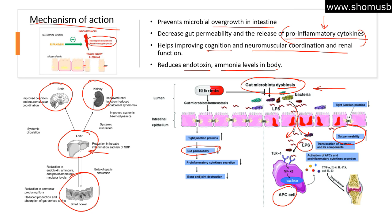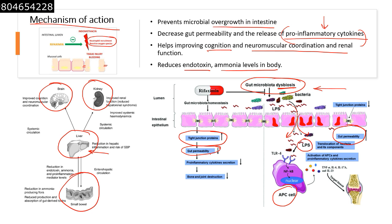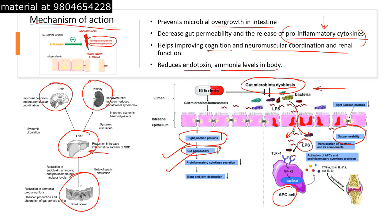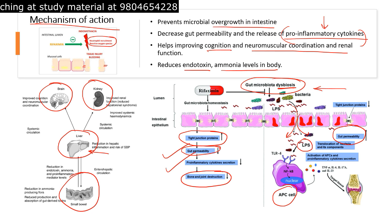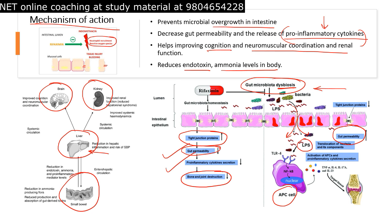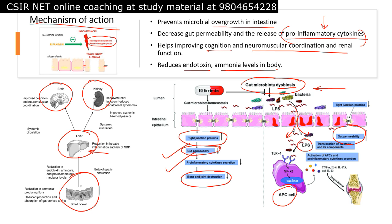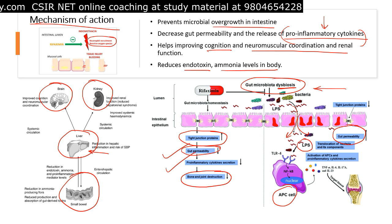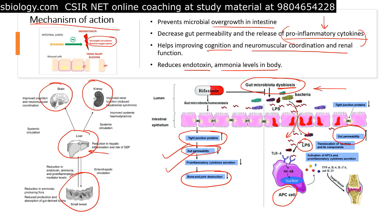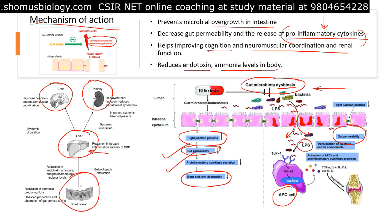Even without a specific microorganism causing it, a person may go to the toilet 10–12 times a day, which causes other systemic problems. When rifaximin is present, tight junction proteins are tightened, reducing gut permeability and pro-inflammatory cytokines. This also minimizes bone and joint destruction, because cytokines like TNF-alpha, IL-23, IL-6, and IL-17a would otherwise target cartilages and joints. Rifaximin can limit this targeted destruction of cartilage and bone, particularly in the joints.